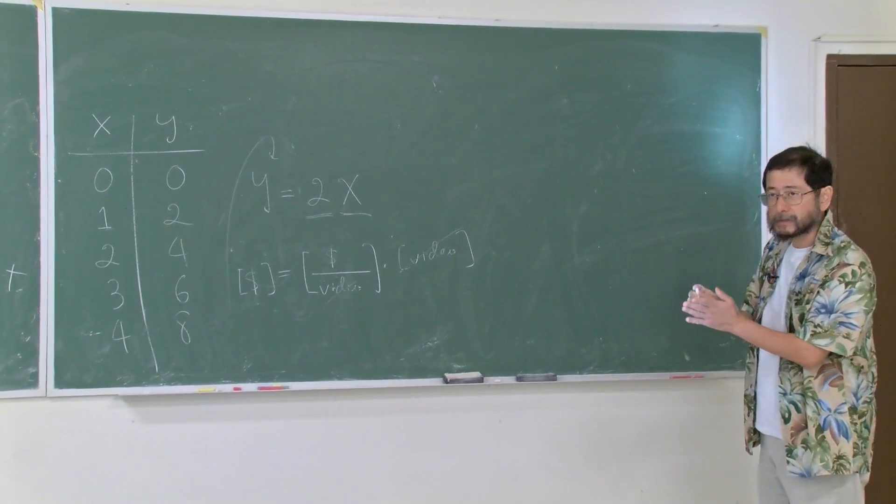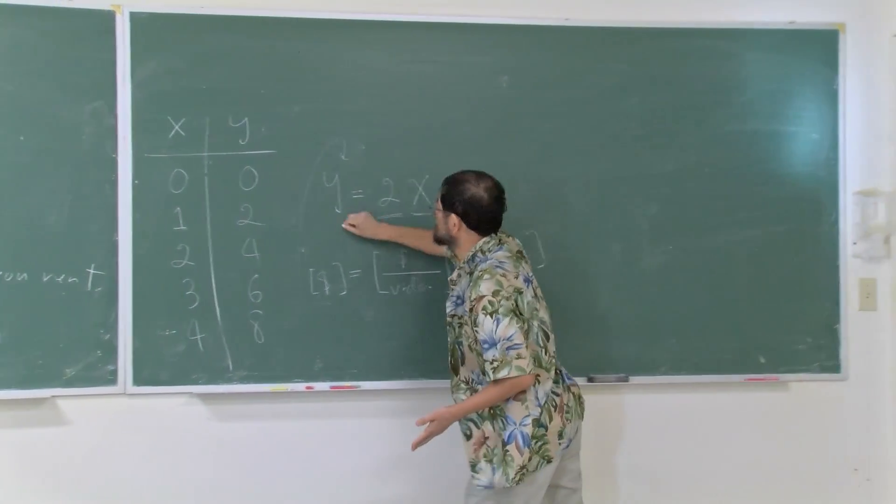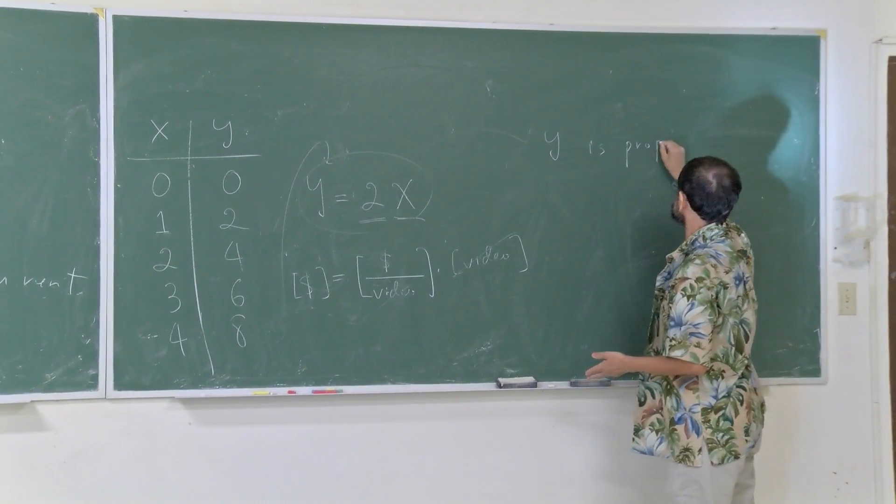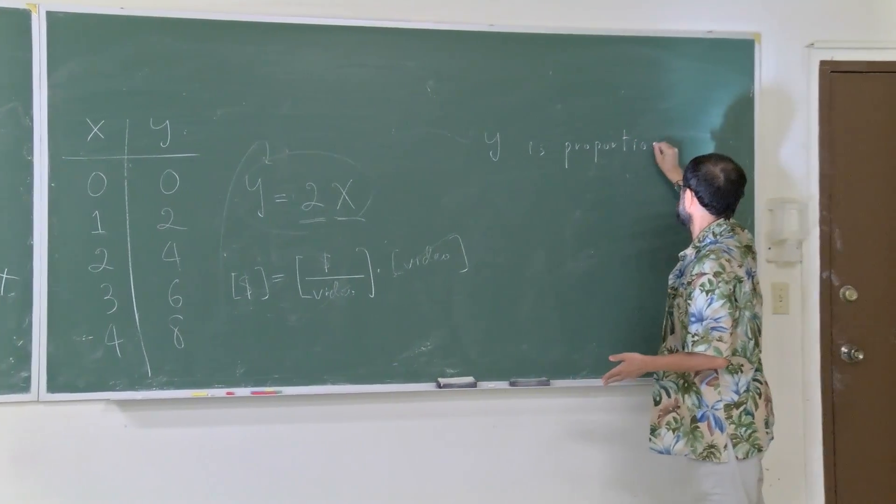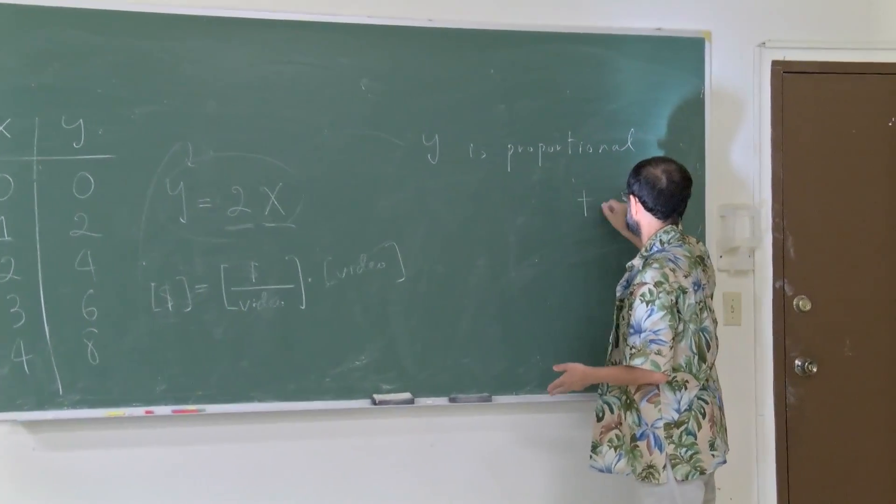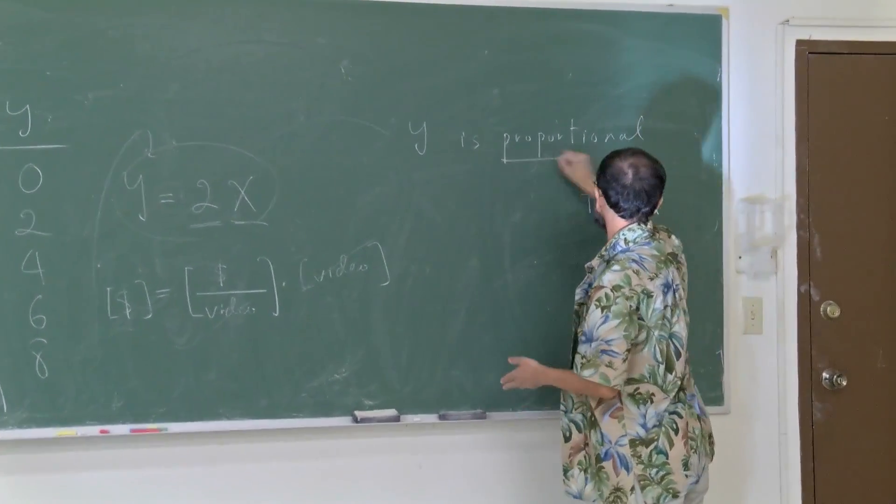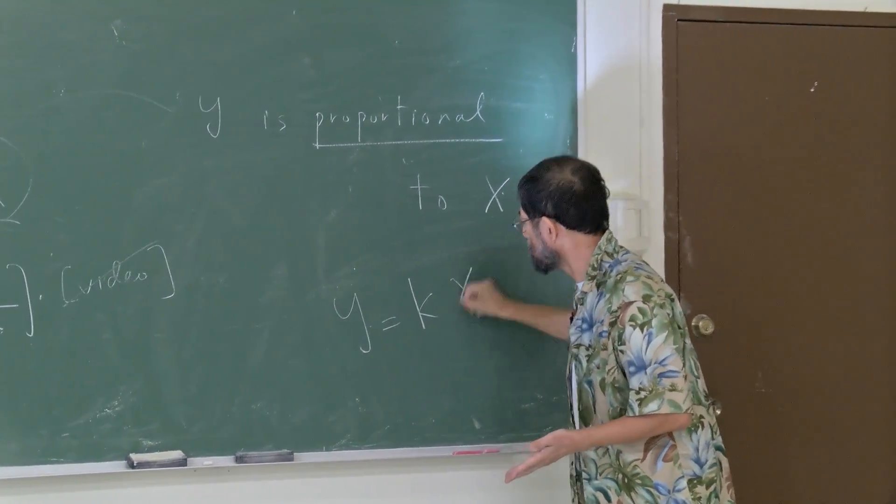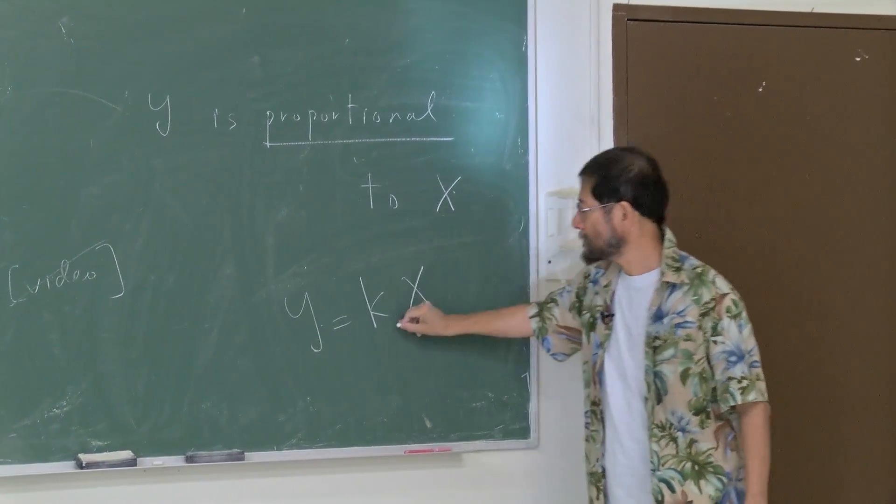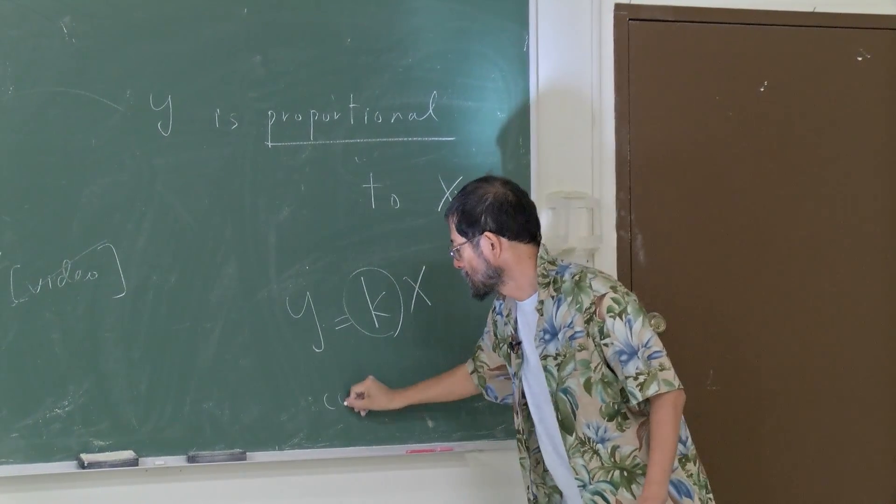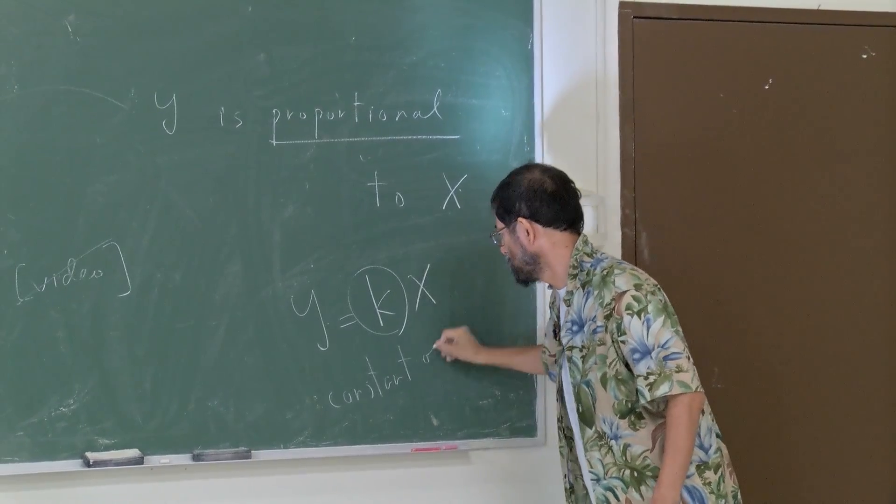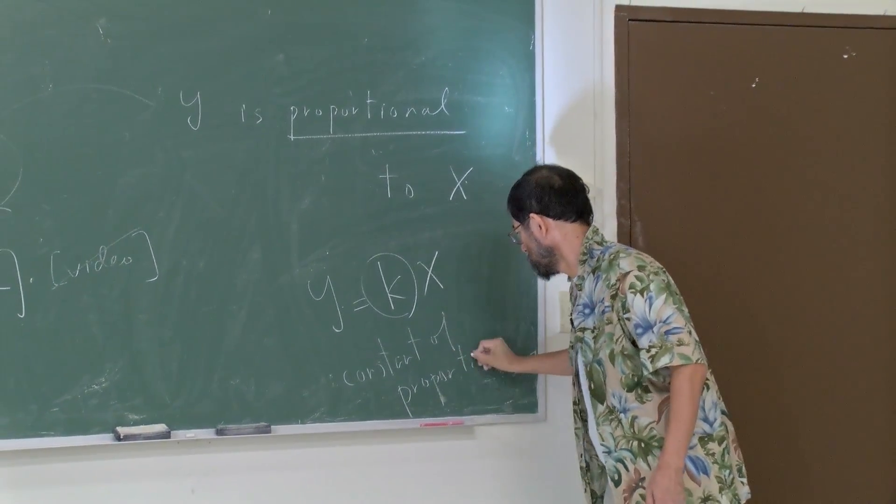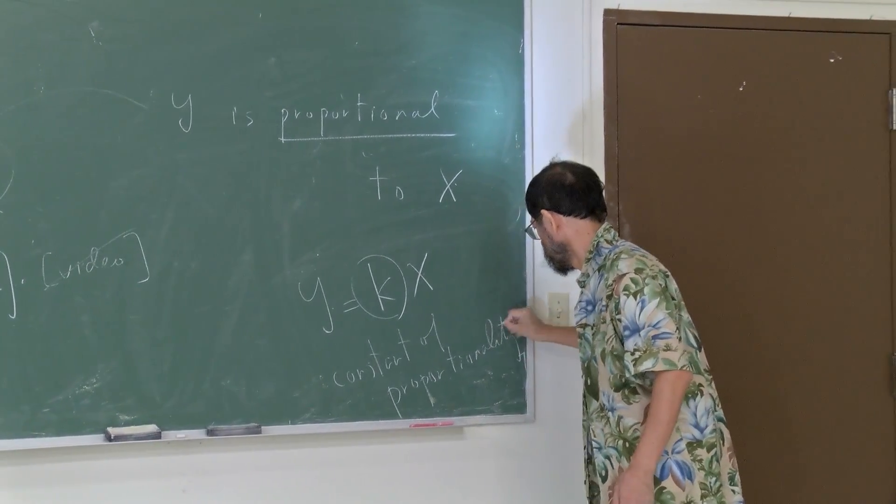This is a very simple situation. In particular, for this situation, we say y is proportional to x. The general form for proportionality is y equals k times x. This k is called the constant of proportionality.